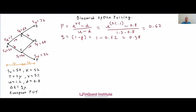Up till now we haven't communicated to the model that this is a put option to be priced. Now is a good time to do so — through the put payoff condition. The put payoff is given as max(K − S, 0). We apply this condition at the terminal nodes D, E, and F using a backward induction scheme, stepping back in time toward VA.